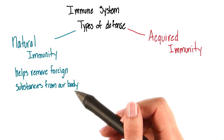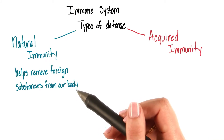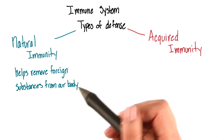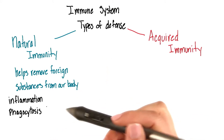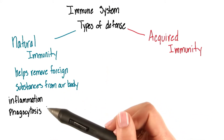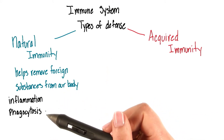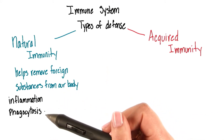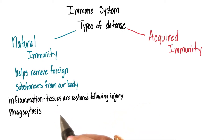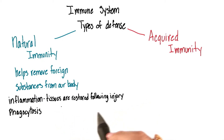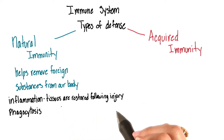Natural immunity refers to the processes that we have to remove foreign substances from our bodies. Inflammation and phagocytosis are two forms of natural immunity. Inflammation occurs when tissues are restored following some type of injury.